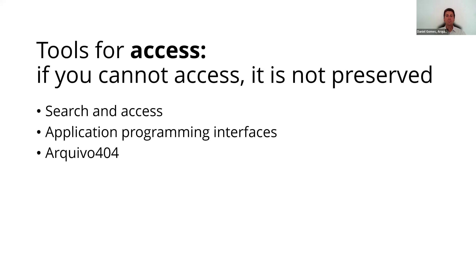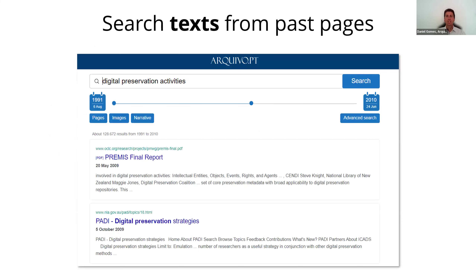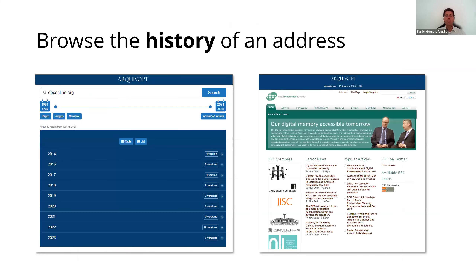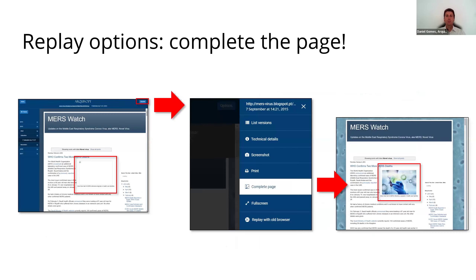After being acquired and safely stored, the digital objects must be kept accessible. The Search and Access tools enable users to search text from historical web pages or browse the history of versions acquired from a given URL. They also provide complementary options to enhance the reproduction of preserved digital objects, such as the complete page feature, which automatically finds objects in external archives.